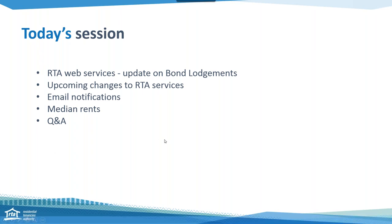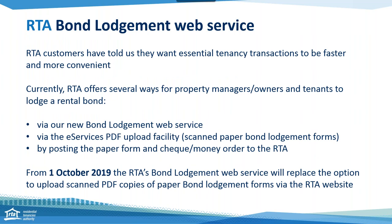Customers have told us that when dealing with the RTA for tenancy transactions we need faster and more convenient ways. The RTA currently offers property managers, property owners, and tenants three ways to lodge a rental bond: the new RTA bond lodgement web service for lodging online; e-services where you can scan a PDF version of the lodgement form and upload it, paying by BPAY; or posting the paper forms with a cheque or money order to the RTA. Tenants have always been able to lodge their bond, so while most bonds come through property managers and owners, they can come from tenants as well.